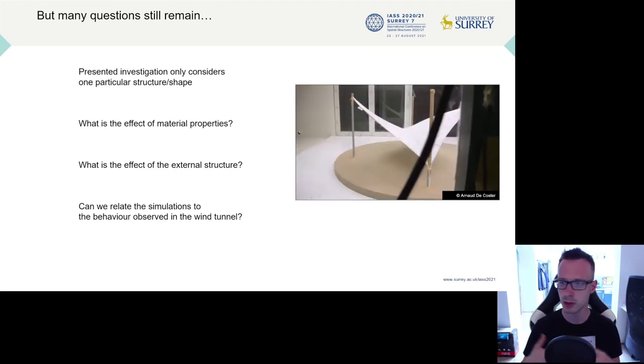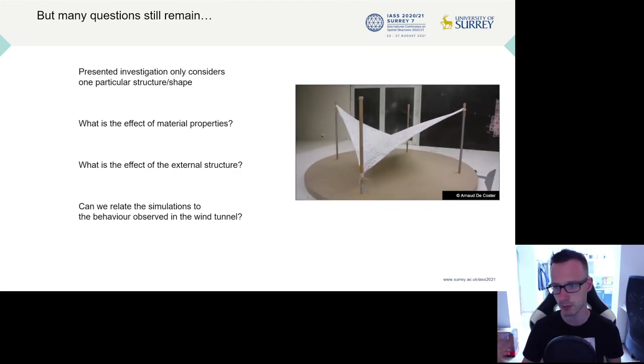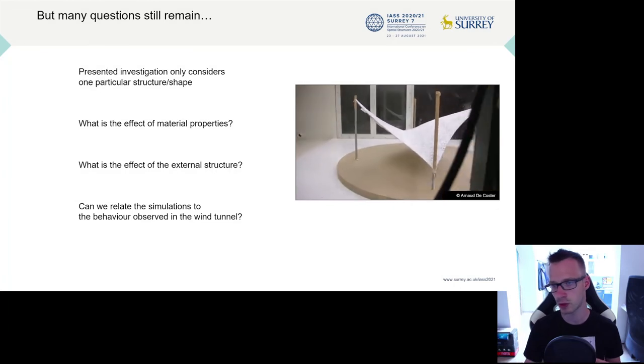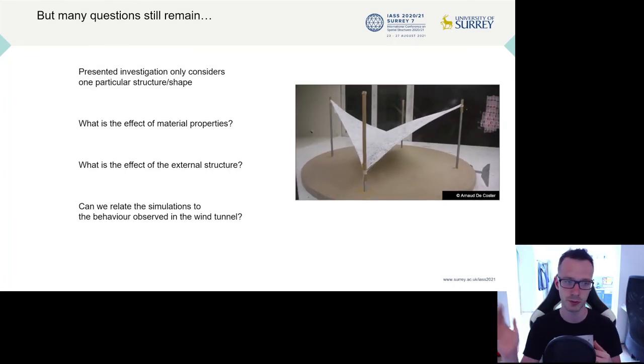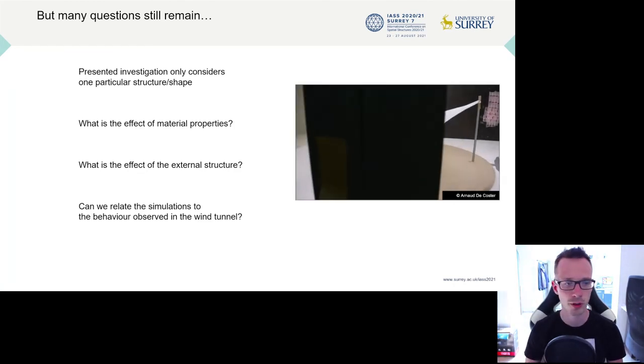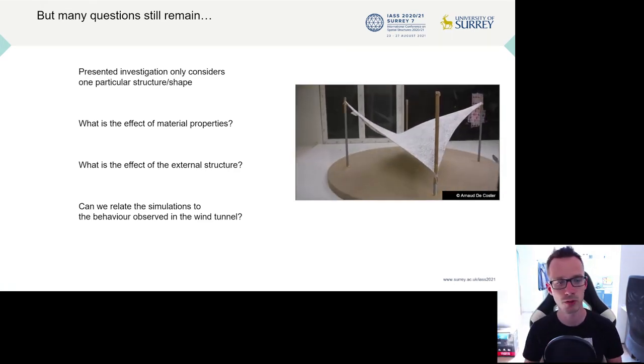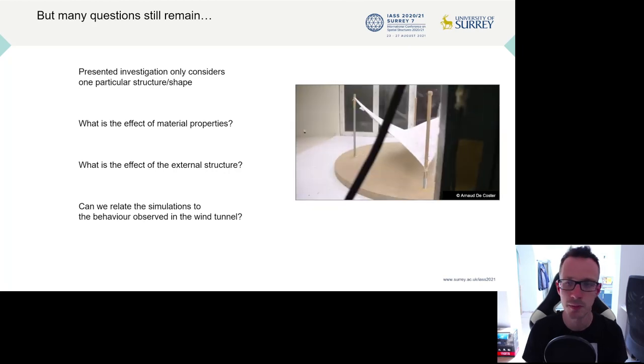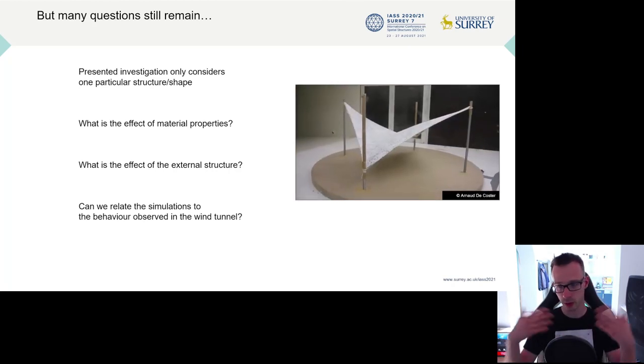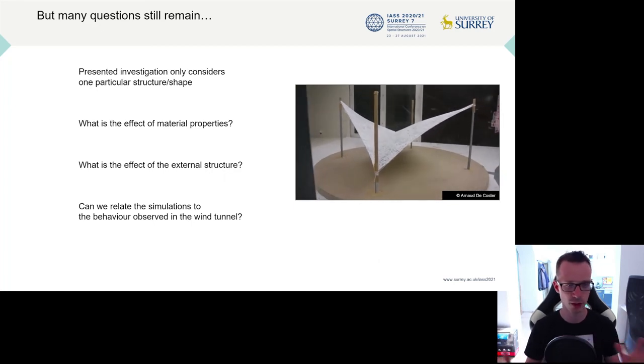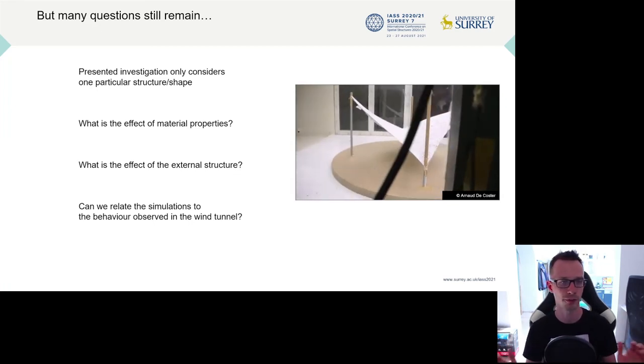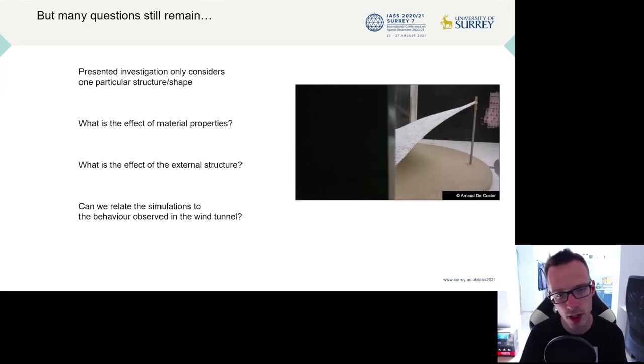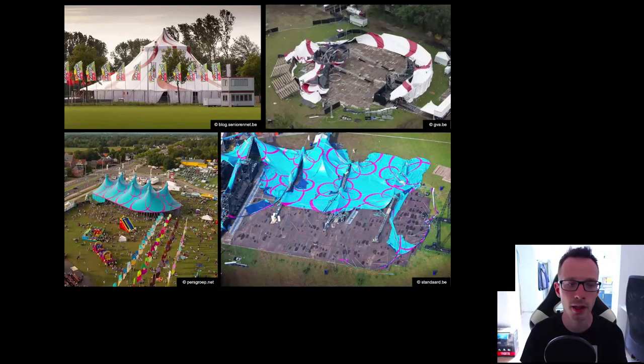For now, we have just looked at one shape, but there are, of course, a lot of different membrane shapes. Each can respond differently to this analysis. We can also look at material properties, the effect of an external structure, which, for instance, for a conical structure introduces additional deformations. And we can start to look at how can we relate our simulation results to, for instance, behavior observed in the wind tunnel results. More specifically, the deformation results obtained by my colleague, Arnaud de Koster. So the created framework is basically just a foundation on which we can start really to conduct a lot of investigations to better understand the interaction between wind and membrane structures in the hopes to prevent this kind of catastrophic failures in the future.